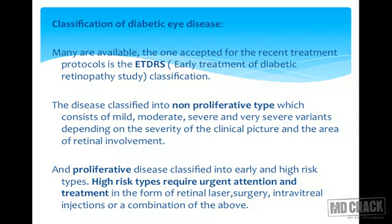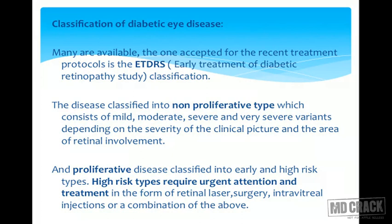The most accepted and clinically relevant classification is the ETDRS classification — the Early Treatment of Diabetic Retinopathy Study. The disease is classified into non-proliferative and proliferative types. Non-proliferative disease is classified into mild, moderate, and severe depending on the area of involvement. Proliferative disease is classified into early and high-risk types, of which the high-risk type mandates urgent treatment. Intervention can be in the form of retinal laser, surgery, intravitreal injections, or a combination.